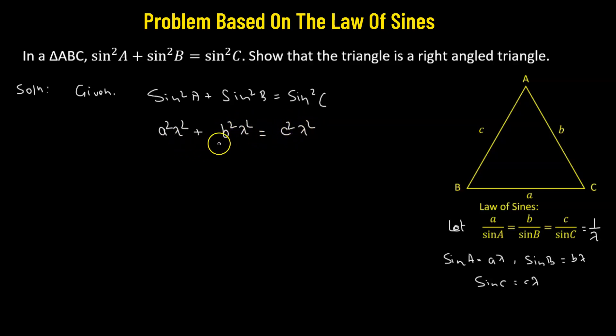So if we factor out lambda squared from both sides, we're going to get a squared plus b squared equals c squared. So that means we have a triangle whose sides are given by a, b, and c, where the sum of the squares of two sides equals the square of the longest side.